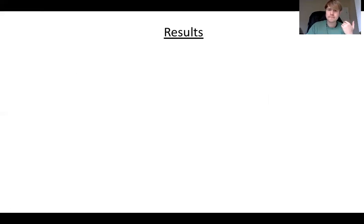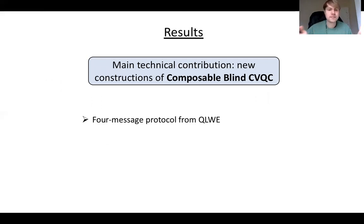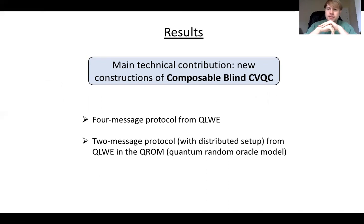Now I can state the main results of this work. The main technical contribution is new constructions of the composable blind CVQC primitive. In particular, we obtain a four-message protocol that is negligibly secure from the quantum hardness of learning with errors. We can also compress it to two messages and distribute the setup among multiple parties, from QLWE and operating in the quantum random oracle model.